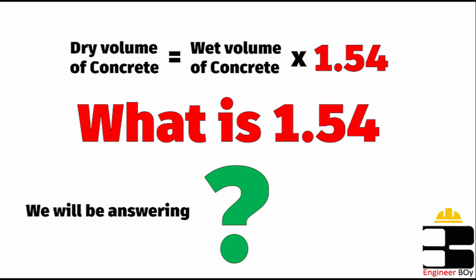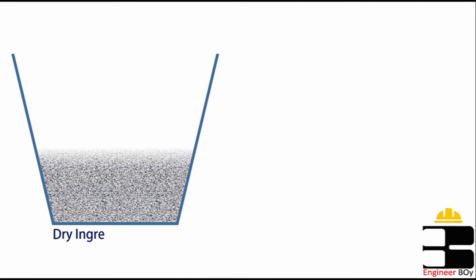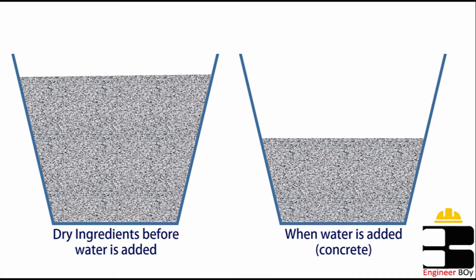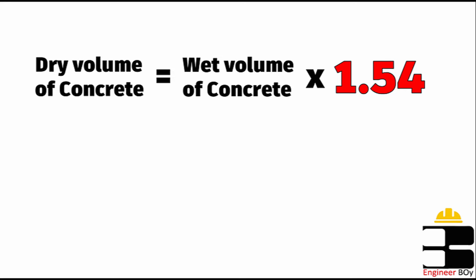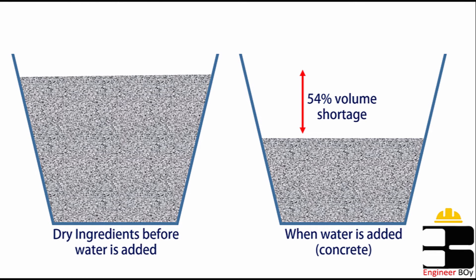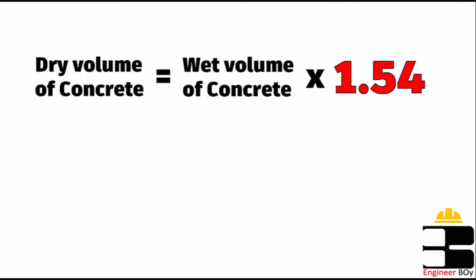Normally in concrete preparation, different ingredients are mixed and then water is added. You may have noticed that after adding water content into the mix, the volume of concrete may decrease by some percentage. This percentage in volume is normally taken as 54%. Again, remember that 54% is never constant — it can be different, and this decrease can be measured after mix design.